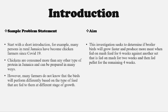Now you have a problem and you need an aim so that you can carry out your investigation or research. This investigation seeks to determine if broiler birds will grow faster and produce more meat when fed on mash feed for six weeks, against another set that is fed on mash for two weeks and then pellet for the remaining four weeks — if we are growing them for six weeks.